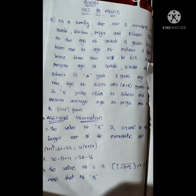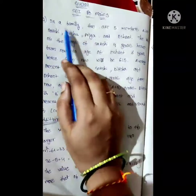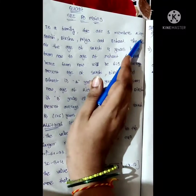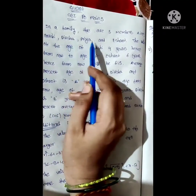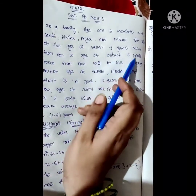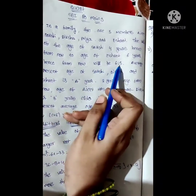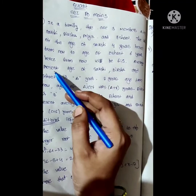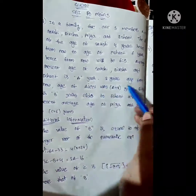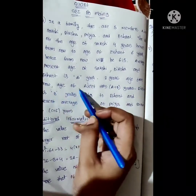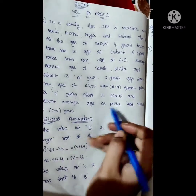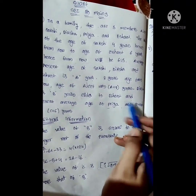The given question states: in a family there are five members — Ajit, Sakshi, Diksha, Priya, and Ishanth. The ratio of Sakshi's age four years hence to Ishanth's age six years hence will be 6:5. The average present age of Sakshi, Diksha, and Ishanth is A years. Two years ago, the age of Ajit was A plus 8 years. Diksha is B years elder to Ishanth, and the present average age of Priya and Sakshi is C plus 6 years.